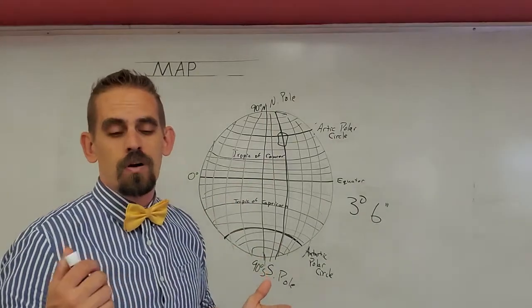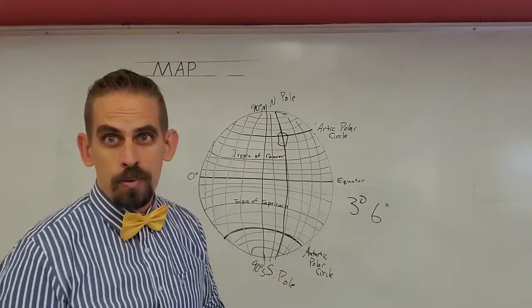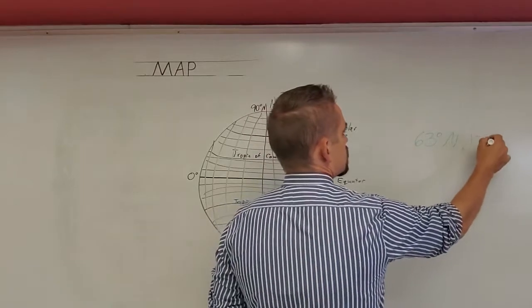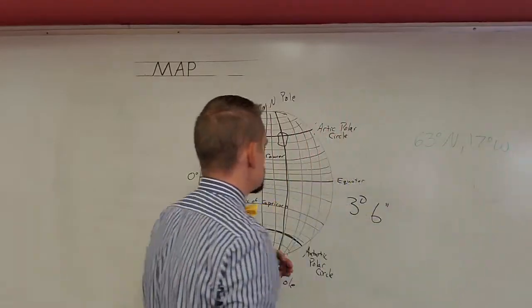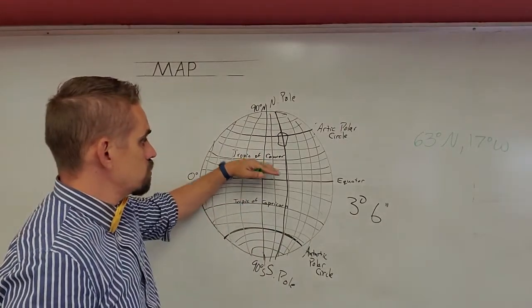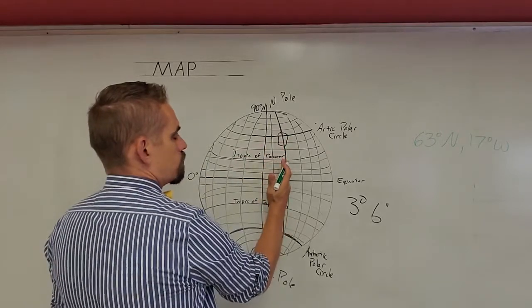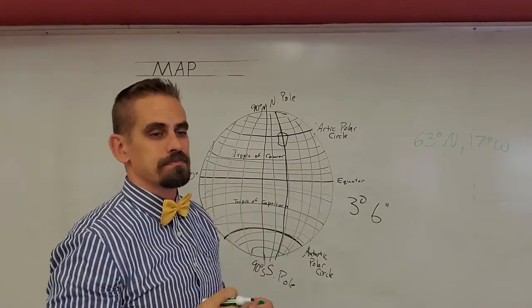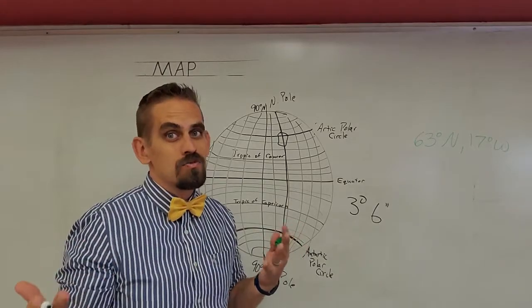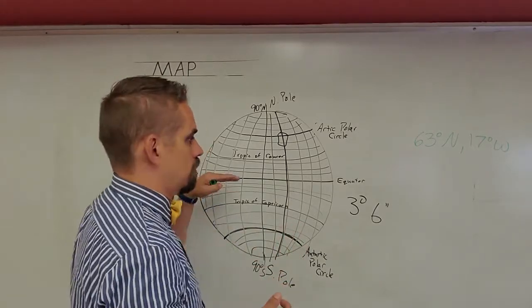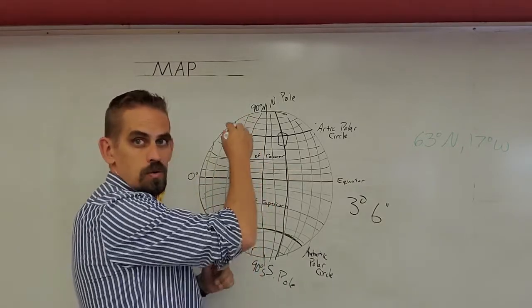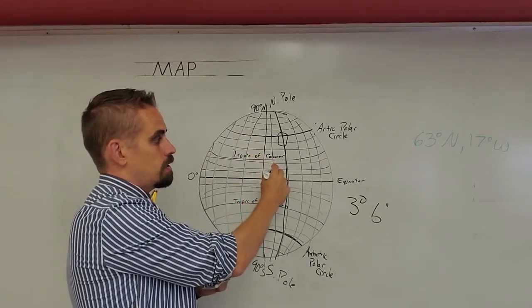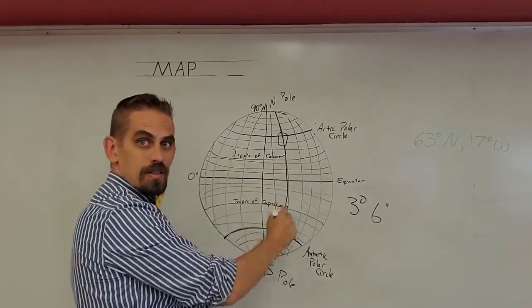If I say 77 degrees north, it means it's north of the equator. If I say 15 degrees south, it means it's south of the equator. So when you're looking for a place and they give you the coordinates 63 degrees north, 17 degrees west, that means it's 63 degrees north of the equator. And then here's my prime meridian. It's 17 degrees west of that location.